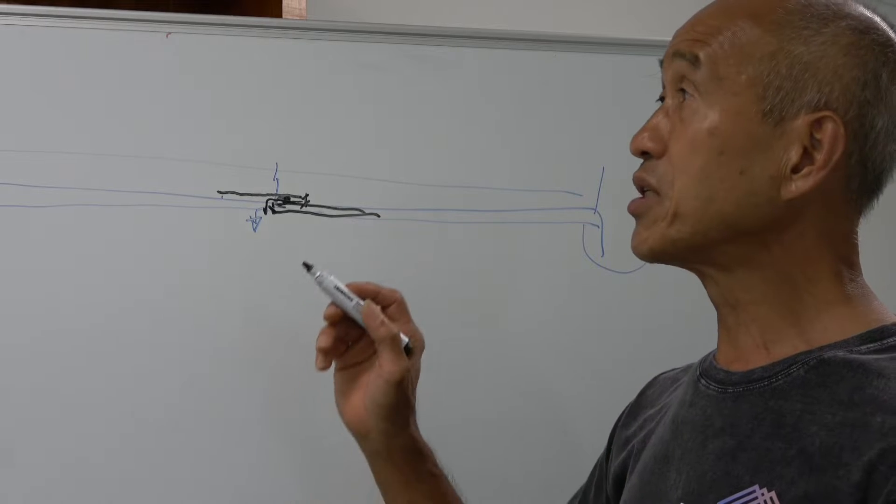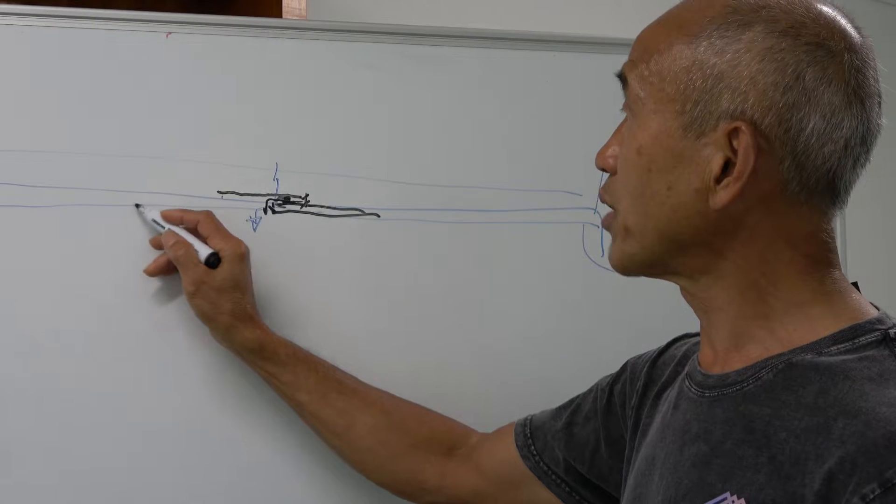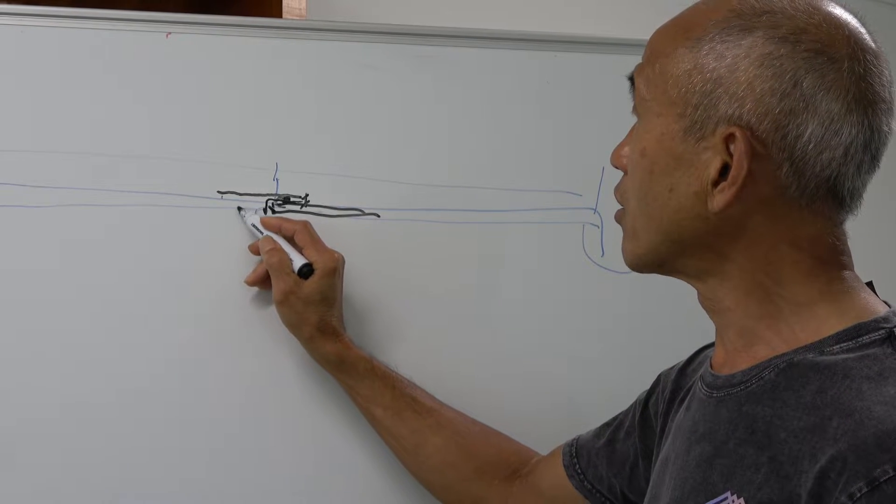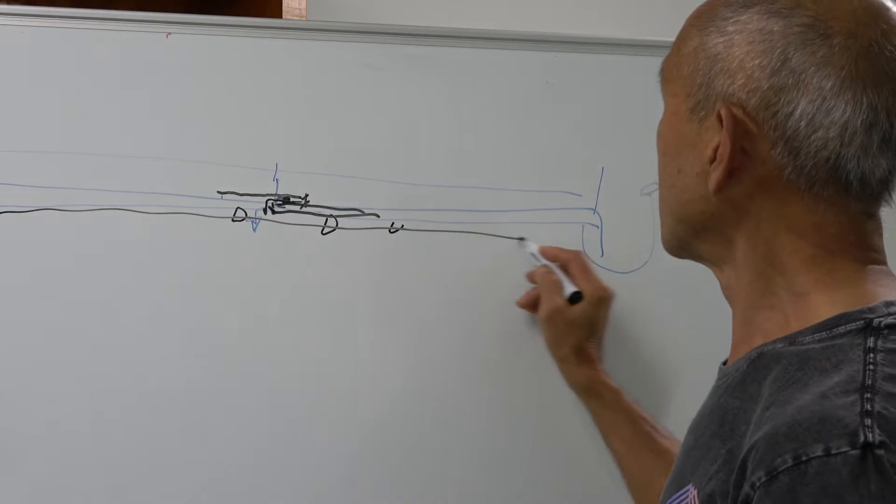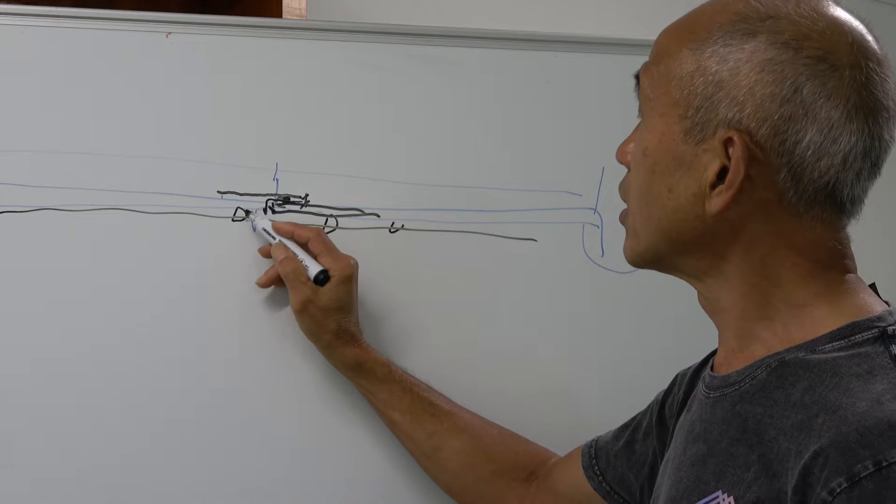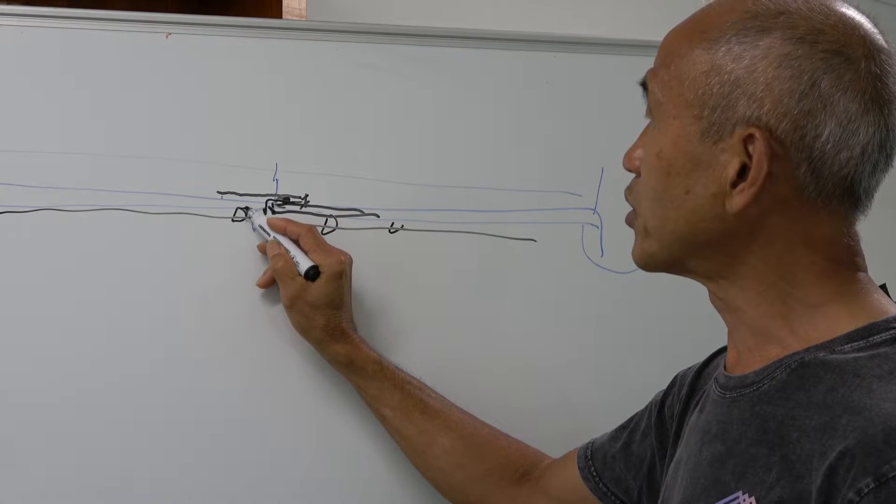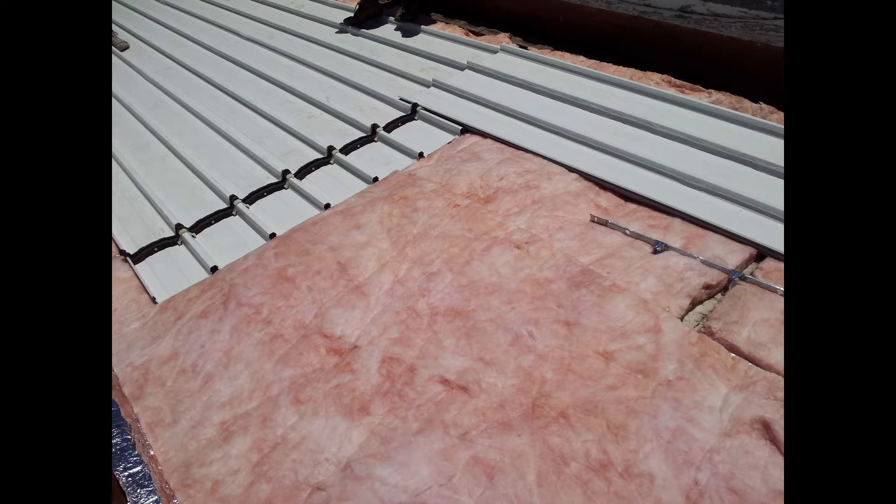Now the advantage in using this system is that you don't have to do a lot of work to the structure of the roof to make this work. All you need is to be able to lift this up slightly and lower that and the joint will work.